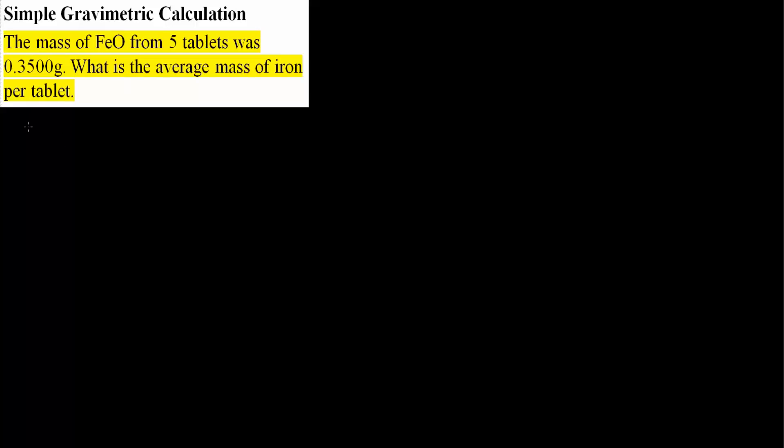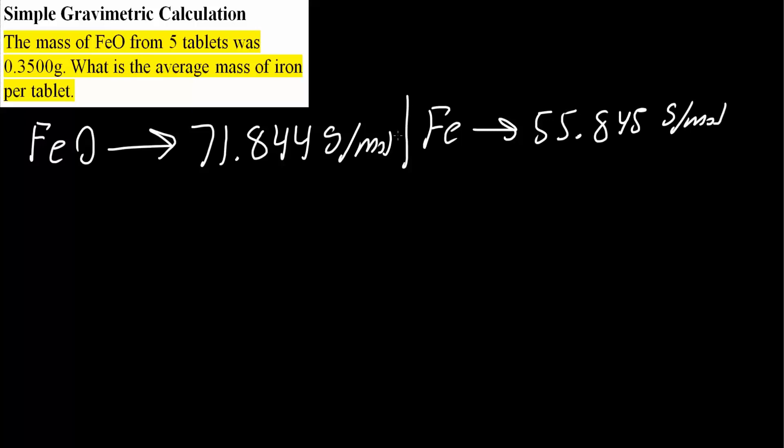The first thing we want to do is determine the molecular weight for FeO, which is 71.844 grams per mole. We know that Fe itself is 55.845 grams per mole. In this problem we want to calculate the average mass of iron per tablet.